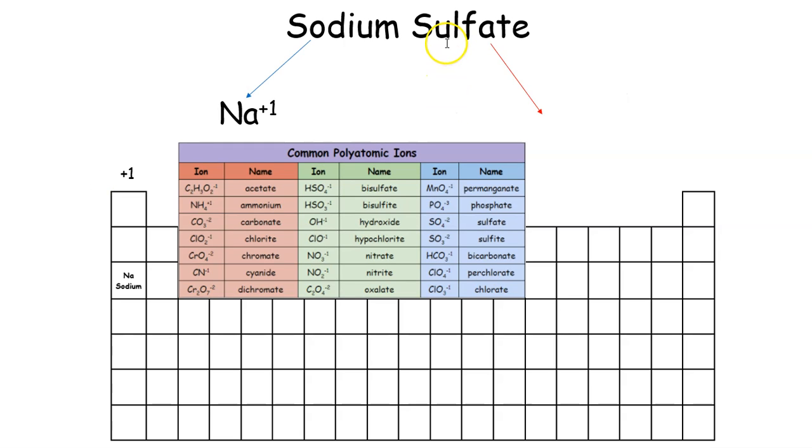Now we have sulfate. We see the ATE at the end. So what we want to do is come and look at our common polyatomic ion list. We see sulfate is SO4 with a minus two charge. So we put SO4-2.